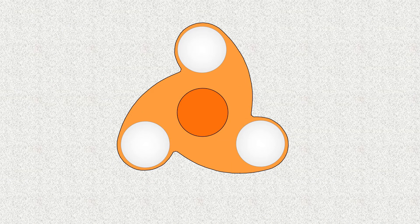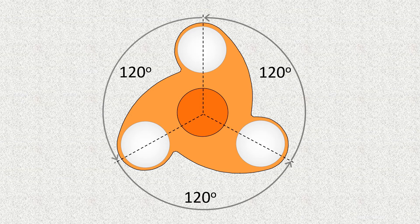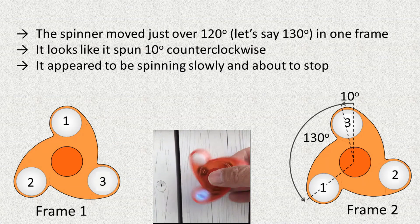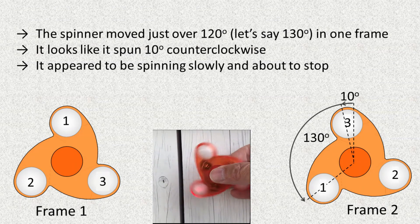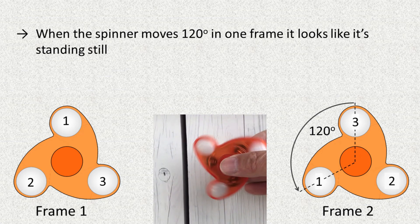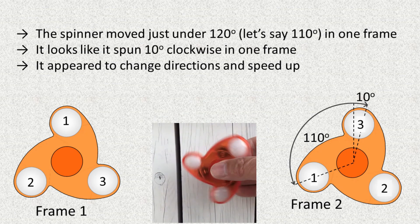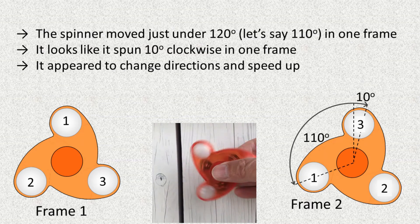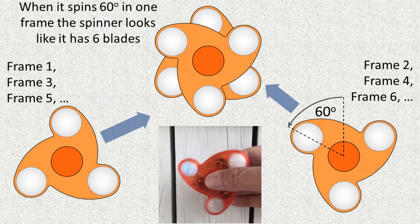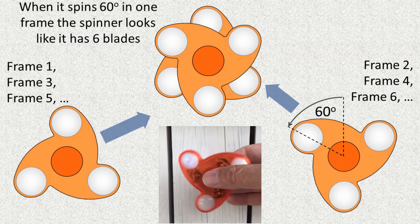What you saw with the fidget spinner is just like what you saw with the ceiling fan. The spinner has three blades spaced 120 degrees apart. At the start of the video, the spinner looked like it spun counterclockwise and then slowed down — that's because it spun just over 120 degrees in one frame. Then it slowed down and spun exactly 120 degrees in one frame, so it looked like it was standing still. Then it slowed down more and spun slower than 120 degrees in one frame, so it looked like it changed directions and started to speed up. As it continued to slow down, it eventually spun 60 degrees per frame — halfway between the blades — making it look like it had six blades instead of three.